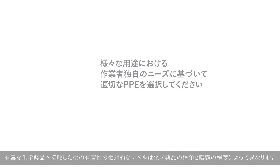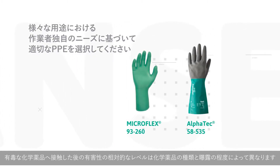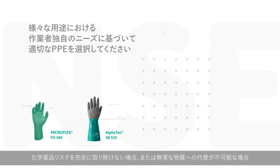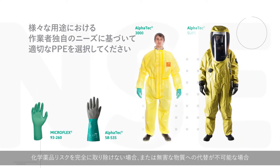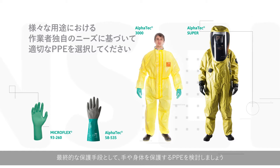Let's focus on hand and body protection. Following contact with toxic chemicals, the relative degree of harm varies by chemical and extent of exposure. In case of the inability to remove a chemical risk completely or to substitute for something non-hazardous, then PPE such as hand protection and body protection are considered as a last line of defence.